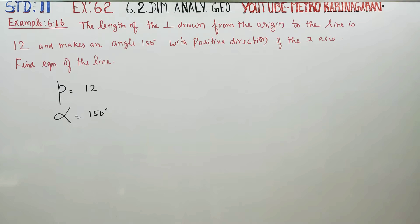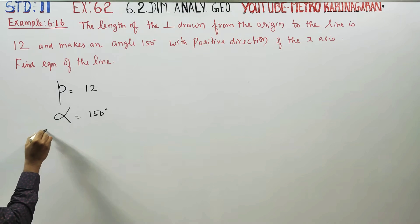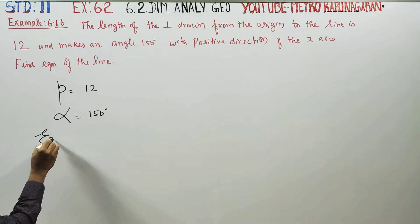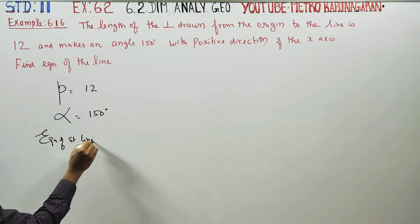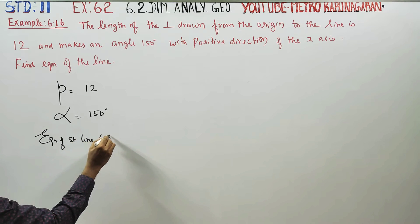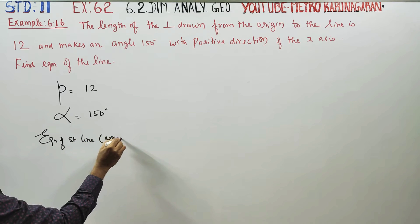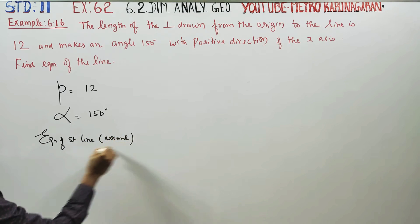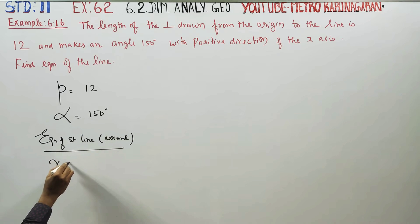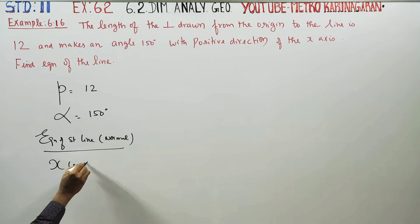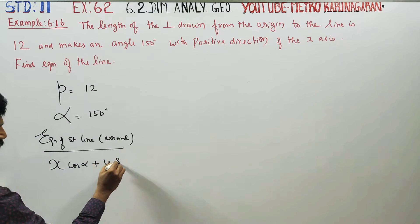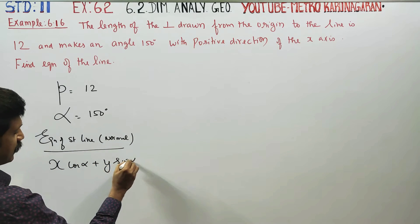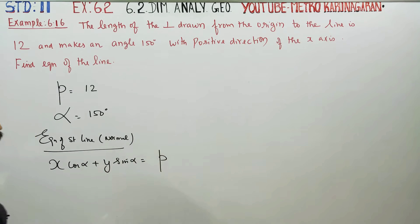Our equation of the straight line is called the equation of straight line in normal form. It is a ready-made formula: x cos alpha plus y sin alpha is equal to p.